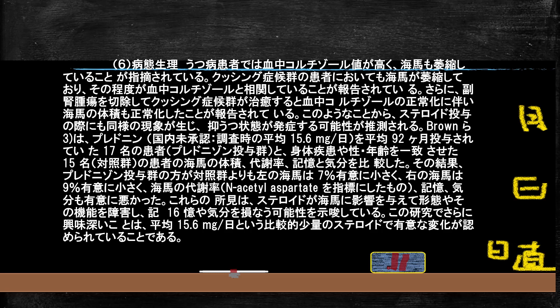左の海馬が7%小さく、右の海馬も9%体積が小さいと、要するに縮んでいます。ステロイドの長期使用で脳の形態が変わり、記憶などの機能も悪くなっています。このスライドが一番大事なことで、ステロイドを長期使用すると脳の体積も機能もおかしくなり、うつ病を発症するということです。